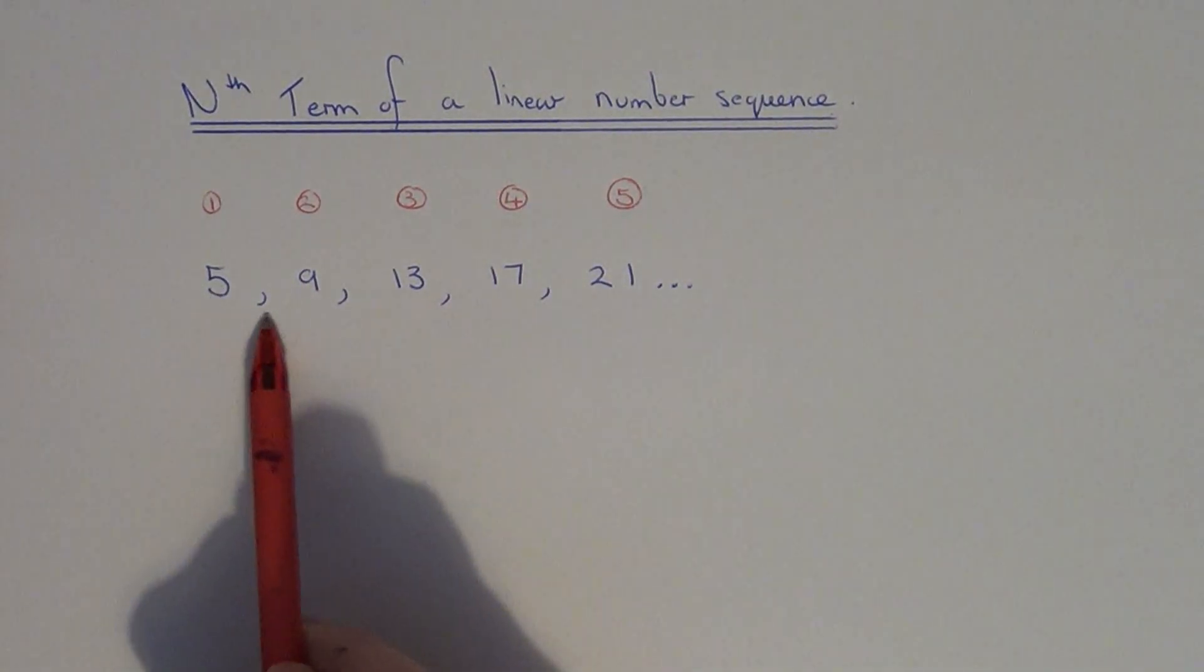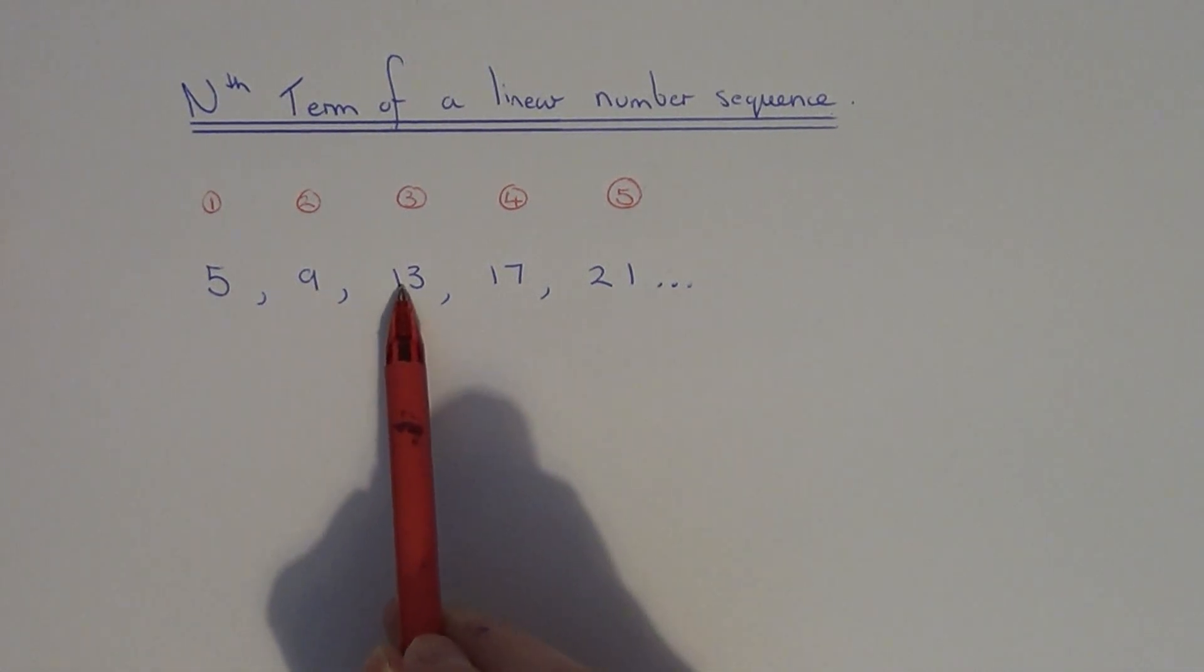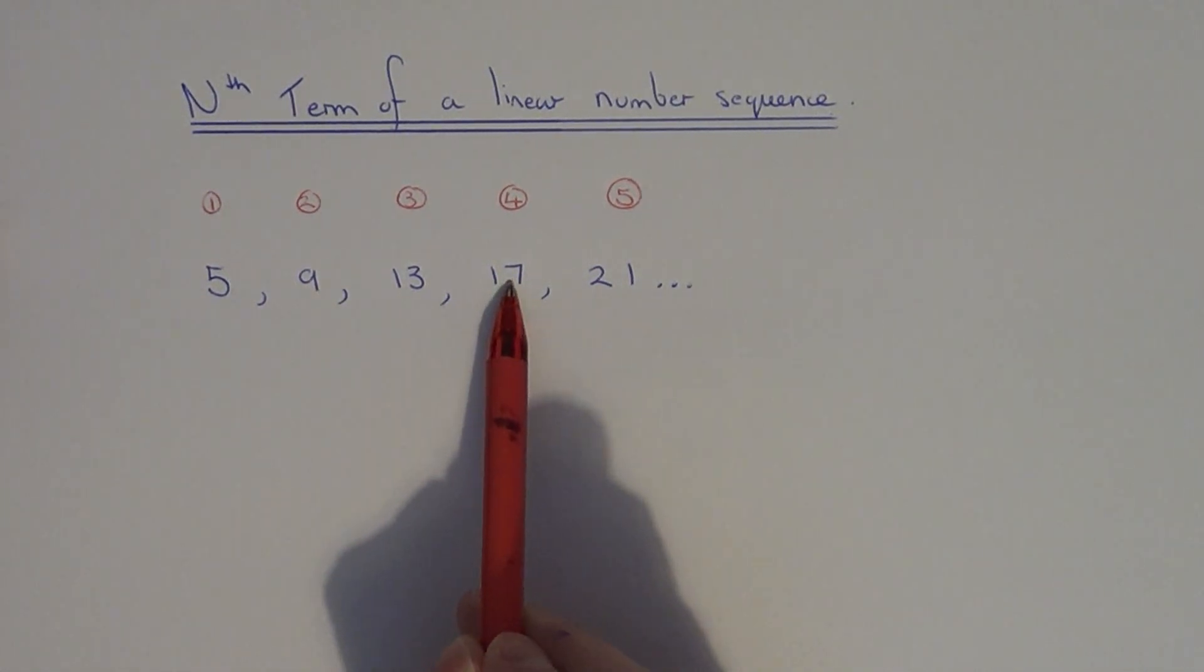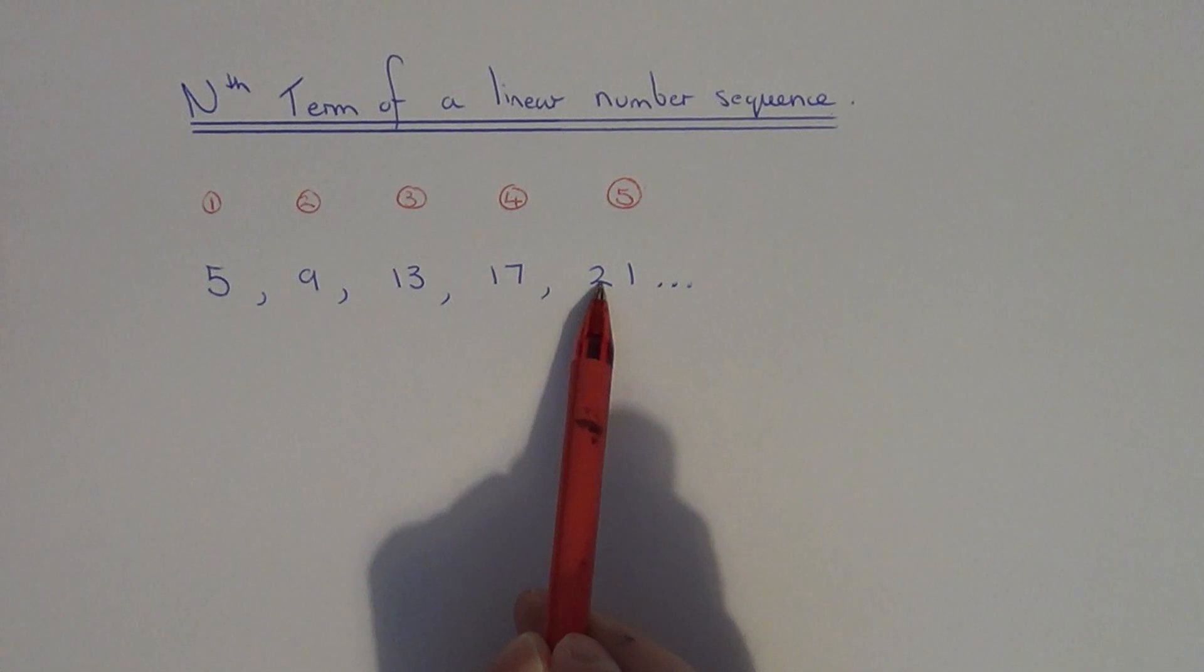The next thing you do is figure out what the sequence is going up in. In this case it's going up in 4's because 5 add 4 is 9, 9 add 4 is 13, 13 add 4 is 17, 17 add 4 is 21.